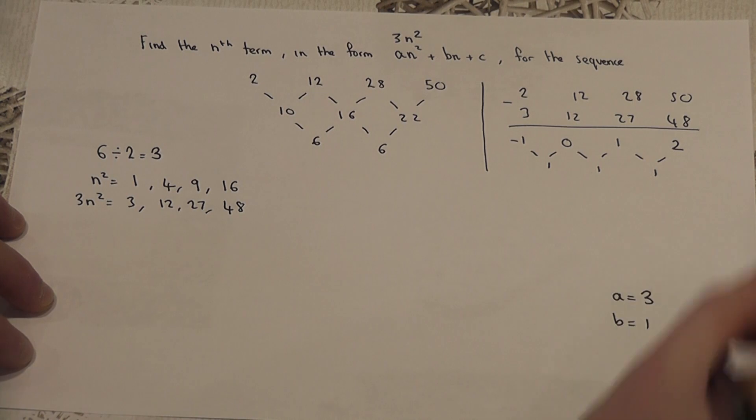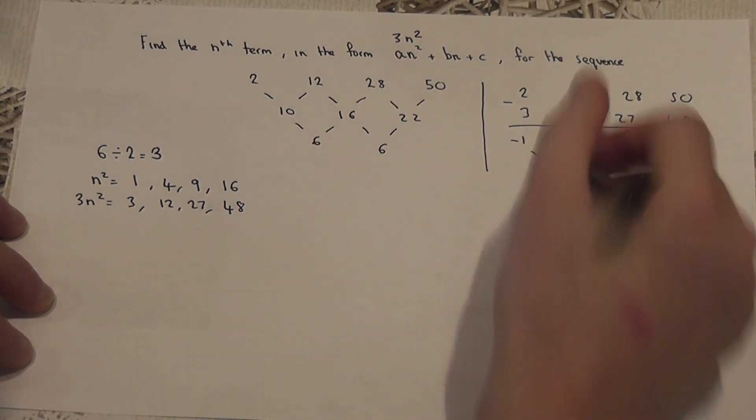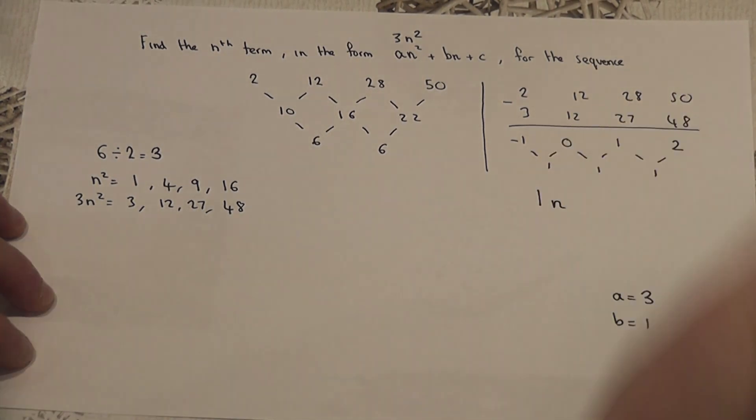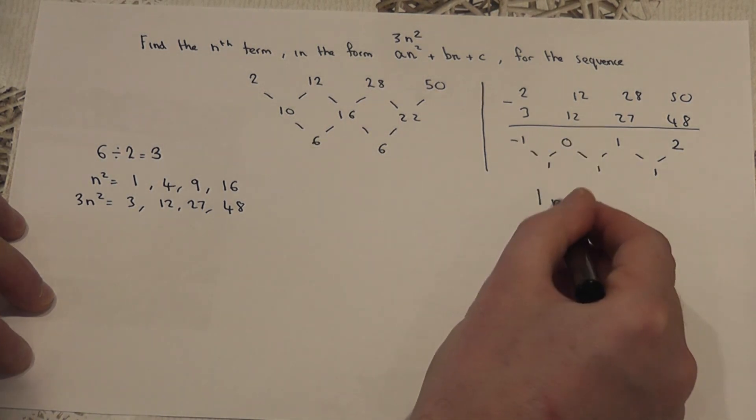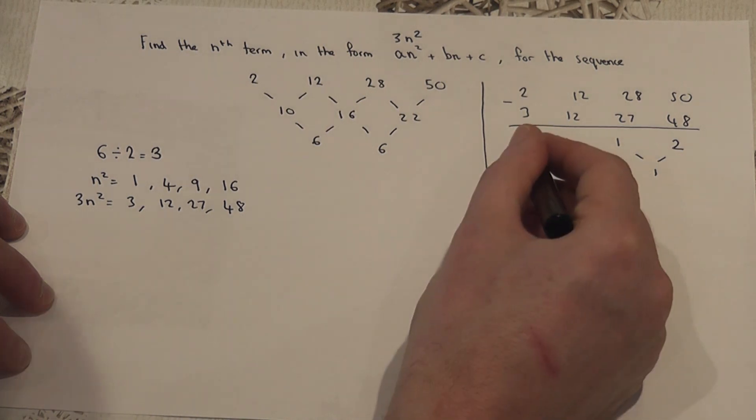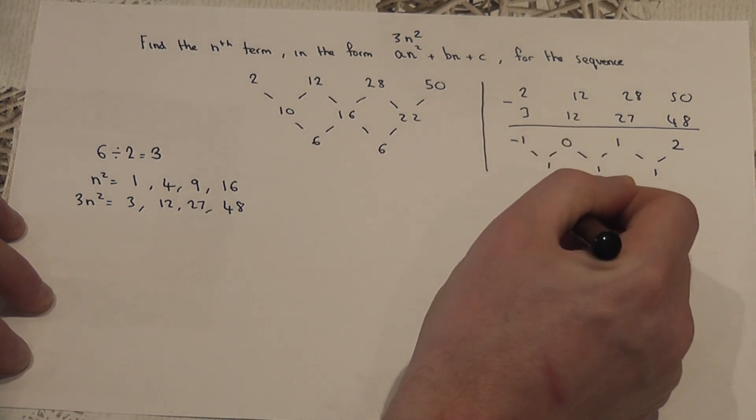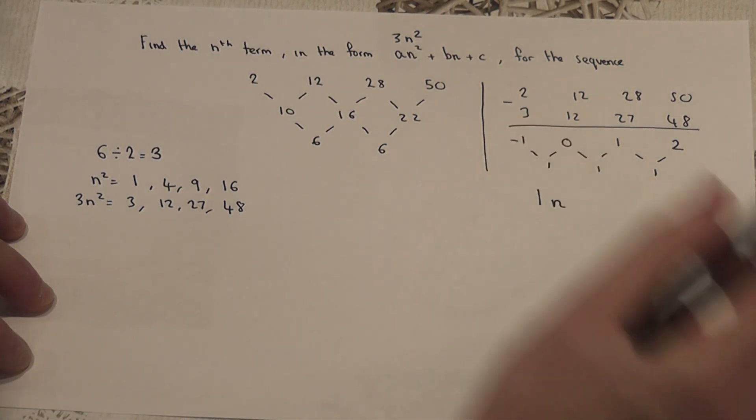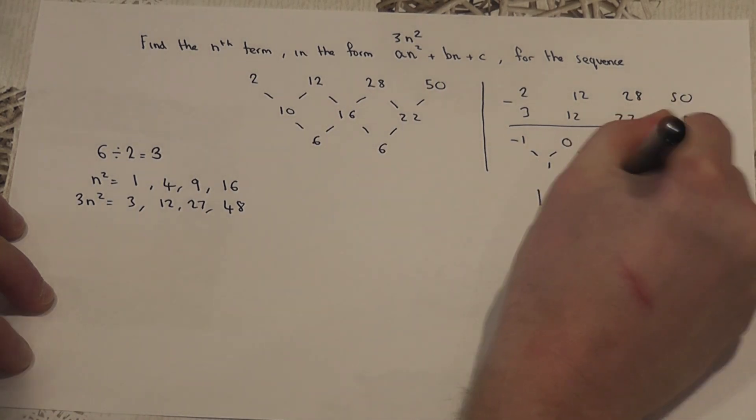So, b is 1, which means that this sequence is of the form 1n. However, for the first term, 1 times 1 is 1, it's not minus 1. So, to get from 1 down to minus 1, I've got to take away 2.